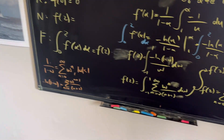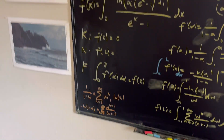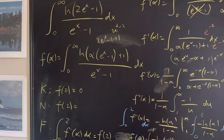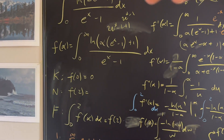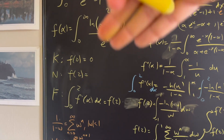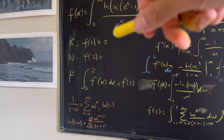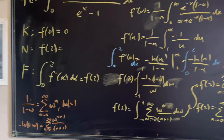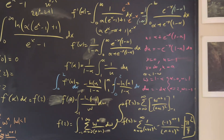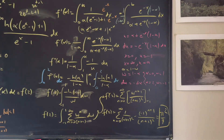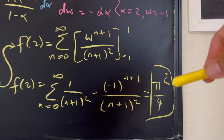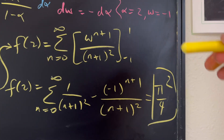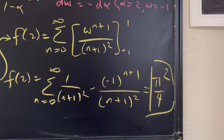We started with the Feynman technique, used our KNF framework, took the partial derivative, did all the substitutions and series work, and arrived at our final answer through the Basel series: the integral equals π²/4.